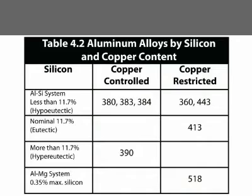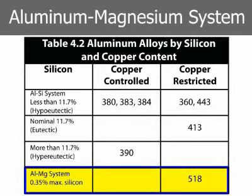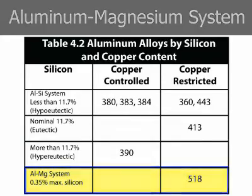Other major alloying elements in the aluminum-silicon system are magnesium and iron. Some constituents are considered impurities, and maximum limits expressed as a single number are imposed. Alloy 518, with a very low silicon content, is based on the aluminum-magnesium system.